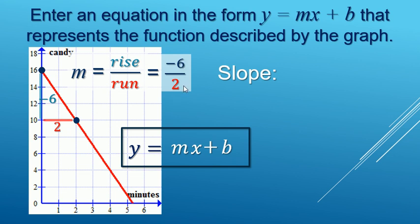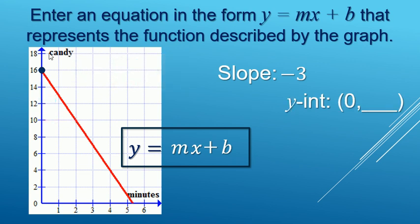We can do the division here. So negative six divided by two does make negative three. For the y-intercept, that's going to be on the y-axis where the graph intersects and right there at 16.